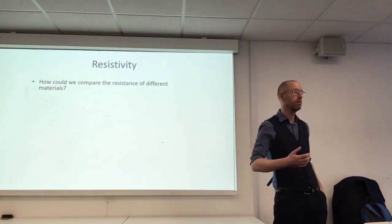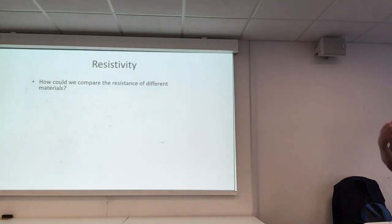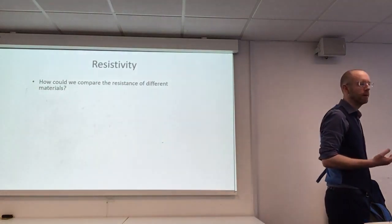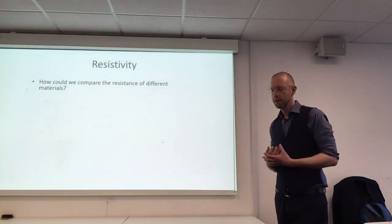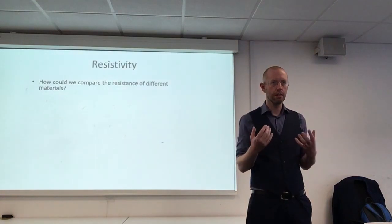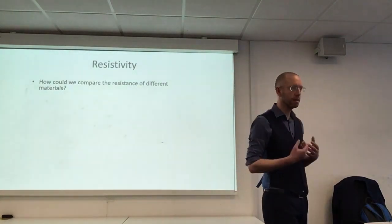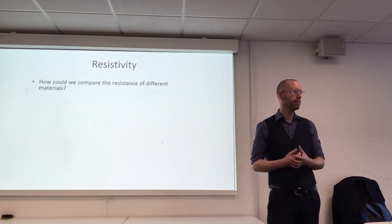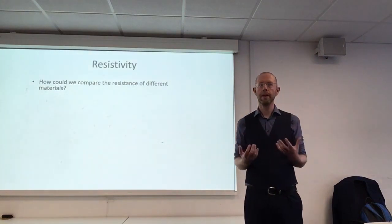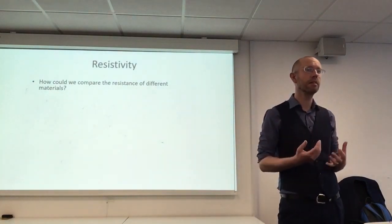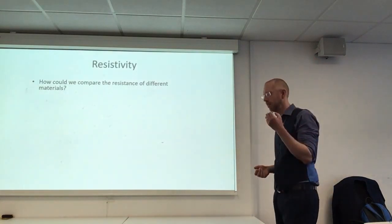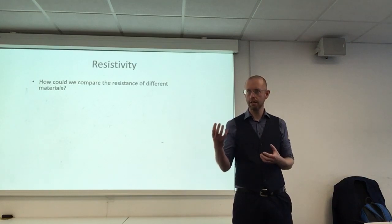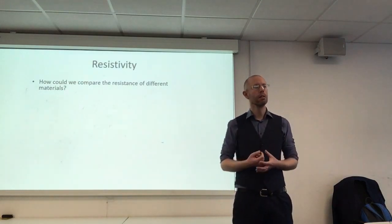Now we're going to look at the next concept: resistivity. Resistivity is quite distinct from resistance — it's related to resistance but it's material-specific. Resistance is just the resistance to the flow of current, and it can be caused by trying to flow through a material, a device, any shape or structure. Whereas resistivity is about the intrinsic ability of a particular material to conduct electricity — we need something to parameterize that. You might have the intuitive sense that things like copper are very good conductors.